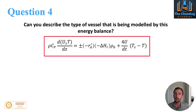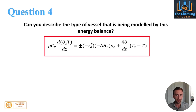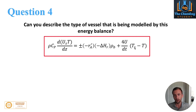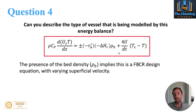Question number four is: can you describe the type of vessel that is being modelled by this energy balance? Sometimes in an interview you may be presented with an equation, and you need to work out what is actually happening within it. That it's an energy balance should be evident by the physical properties present — you wouldn't have specific heat capacity, surface temperatures, and reference temperatures within a material balance. We also have the value of U, which is your overall heat transfer coefficient.